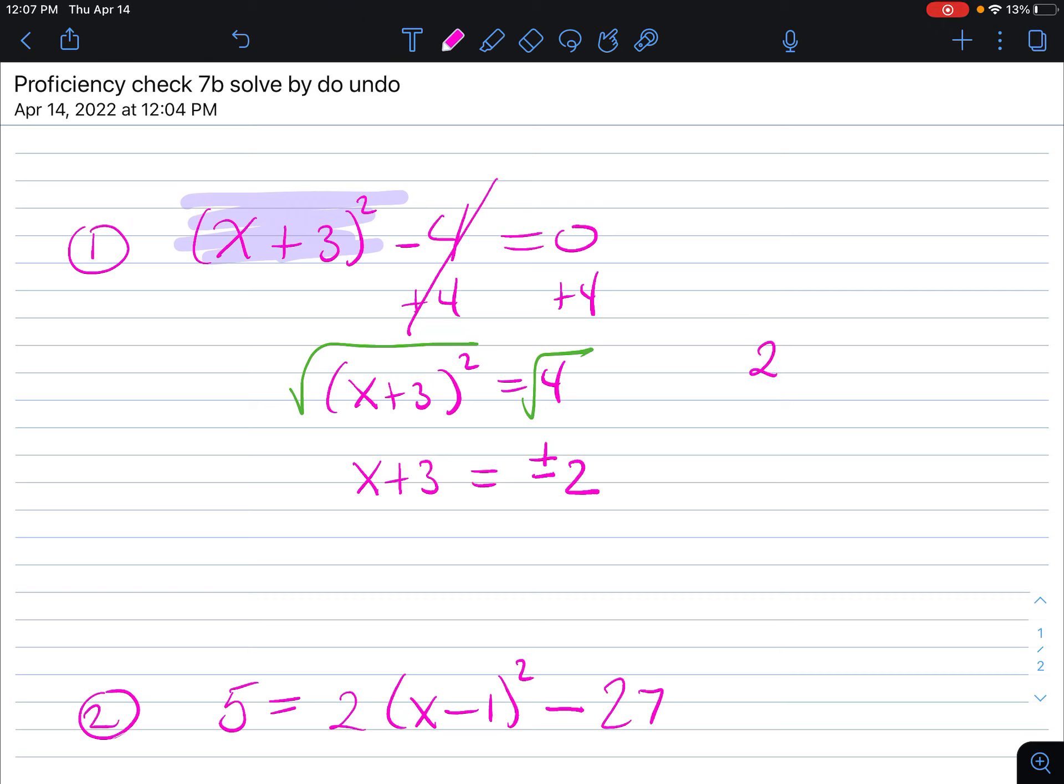This is because if I take 2 times 2, I get 4. If I take negative 2 times negative 2, I also get 4. 2 squared is 4. Negative 2 squared is also 4. So these are two answers.